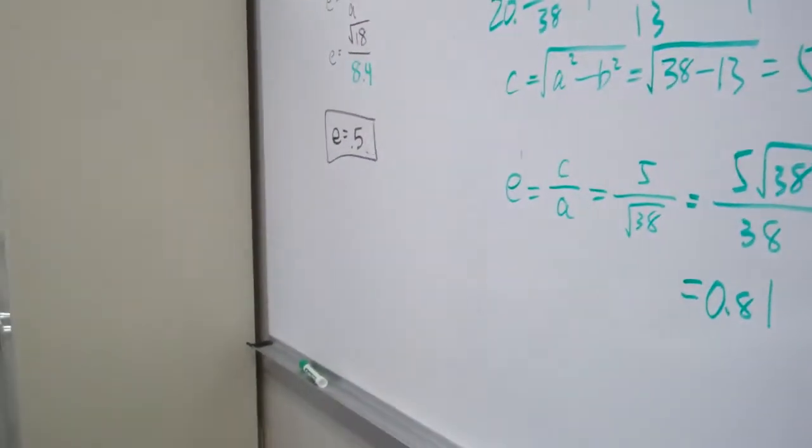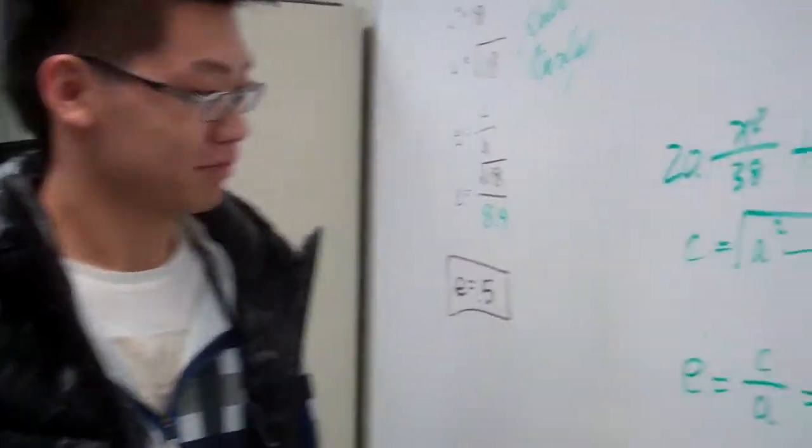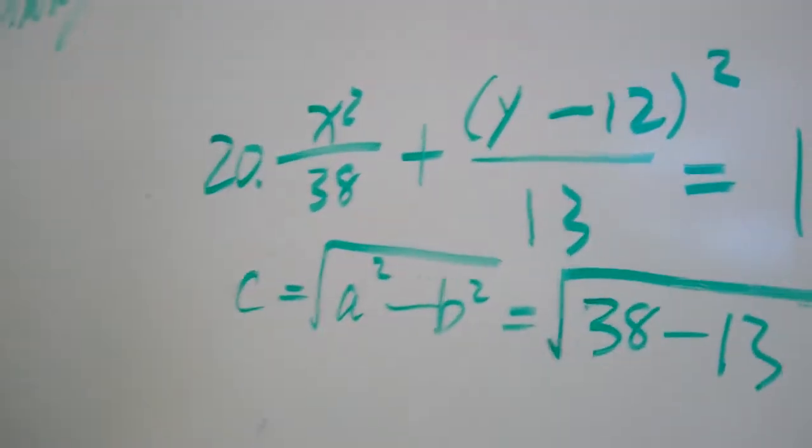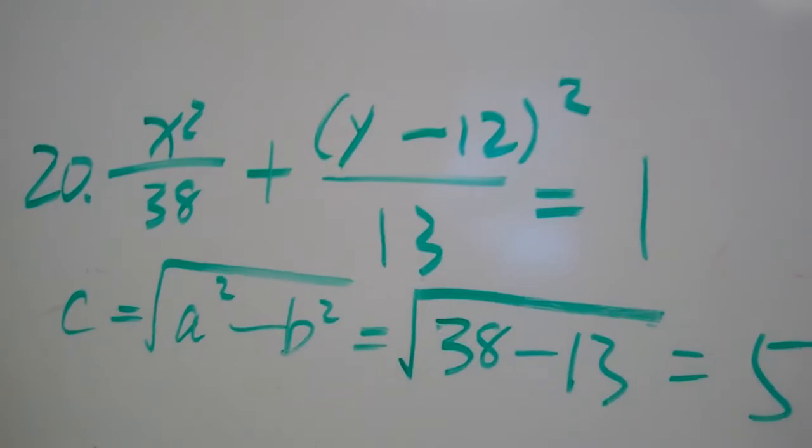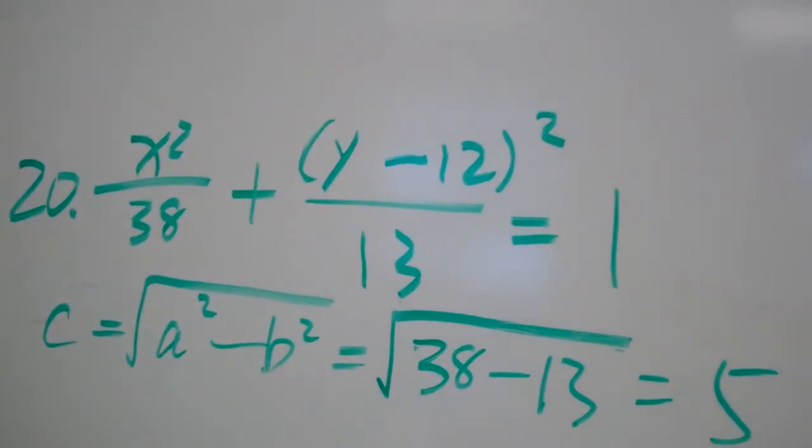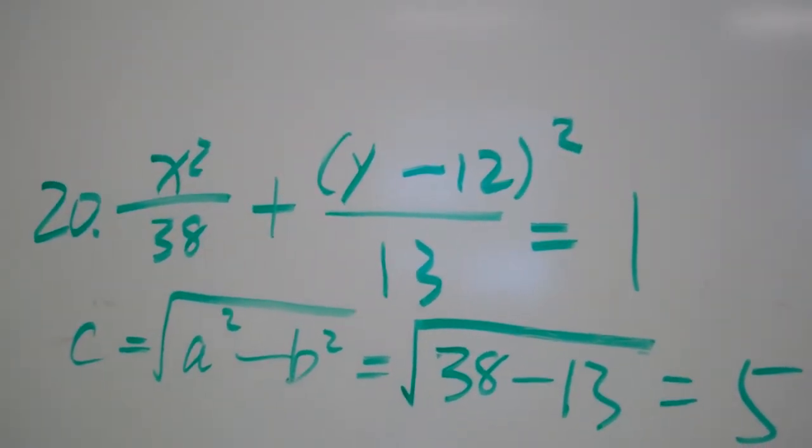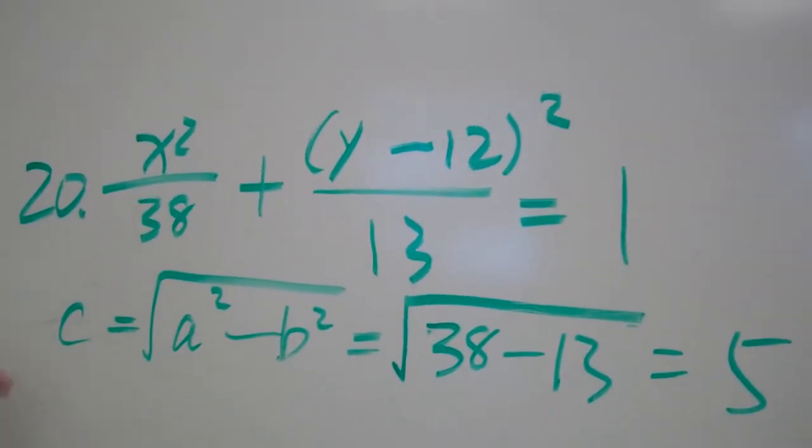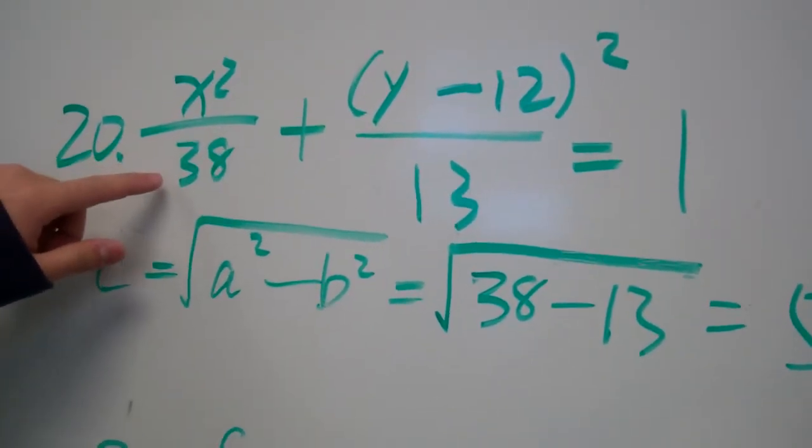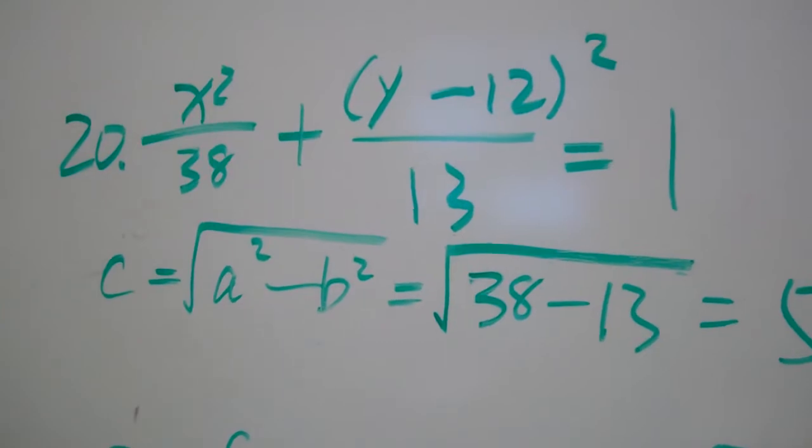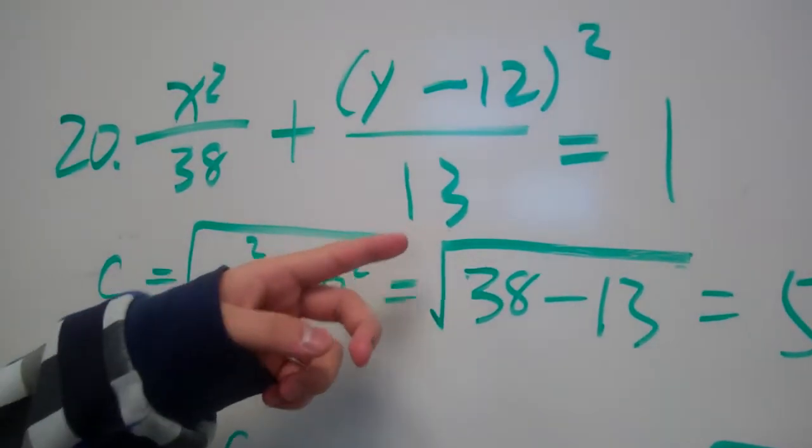We're moving up now to number 20. Kwon did us number 20 here. Number 20 had this equation for starts. Kwon, can you point to A squared? A squared is a bigger number, so that's 38. Of course. B squared? Yeah, 13. All right.